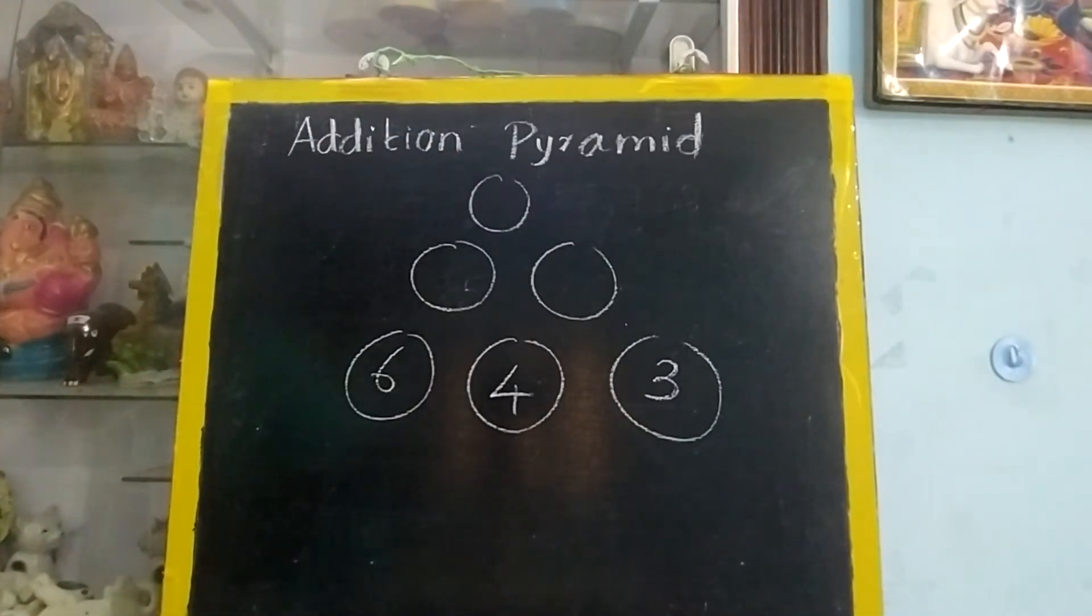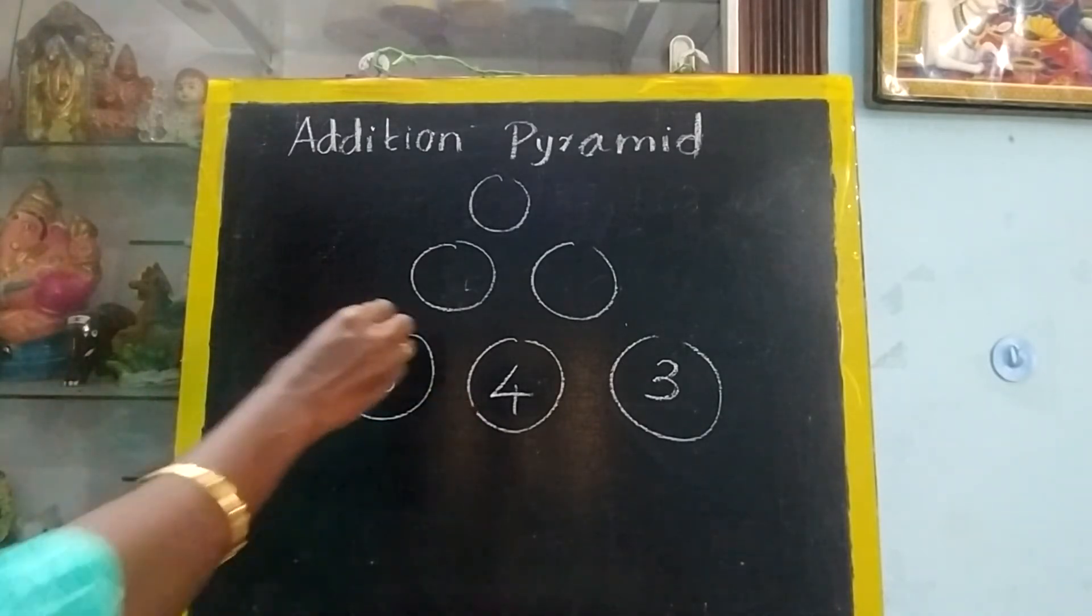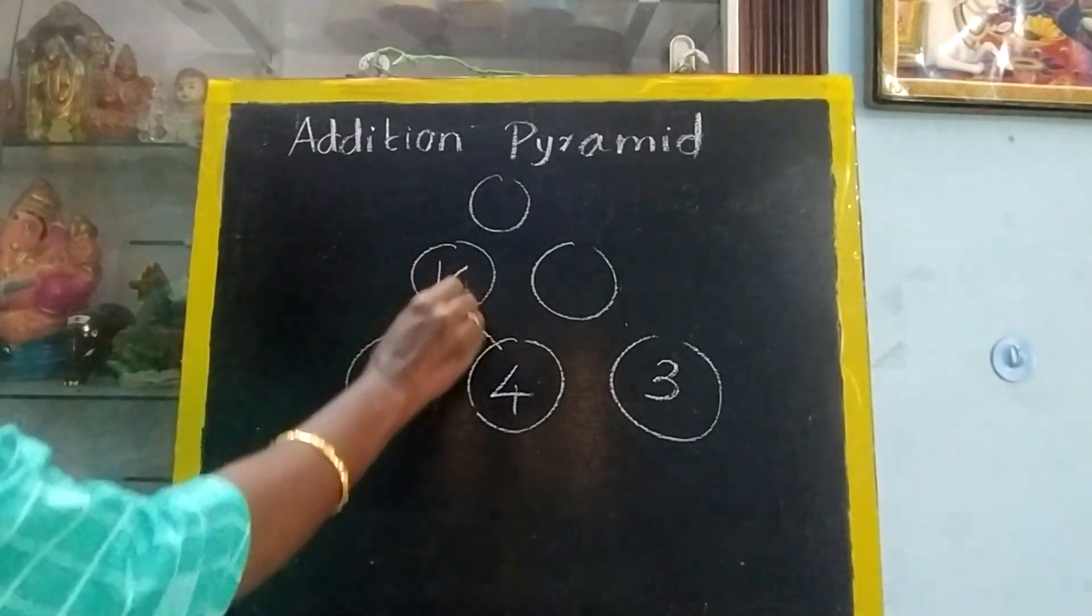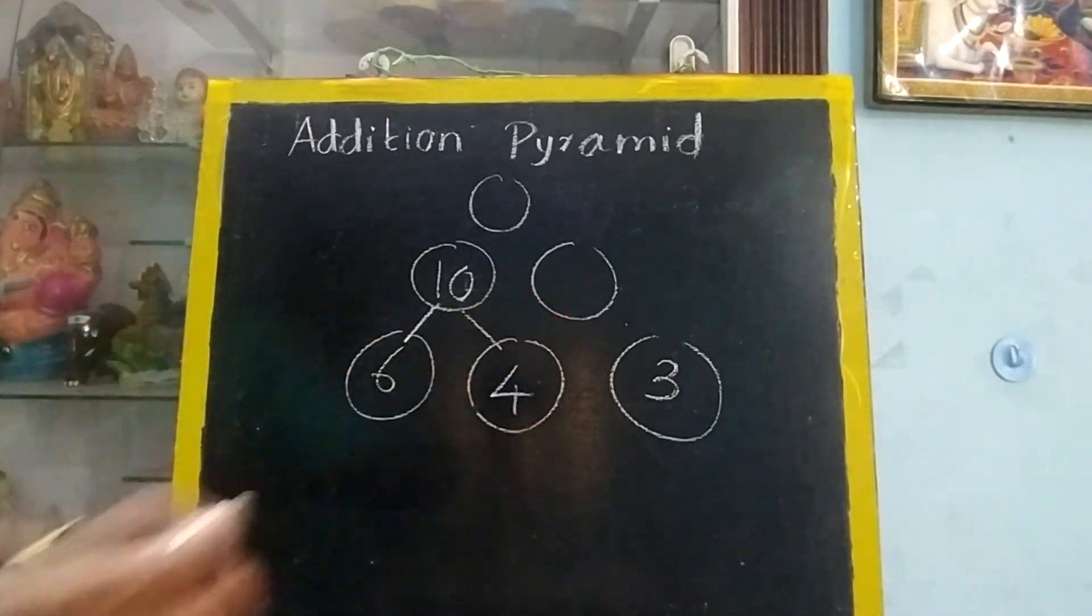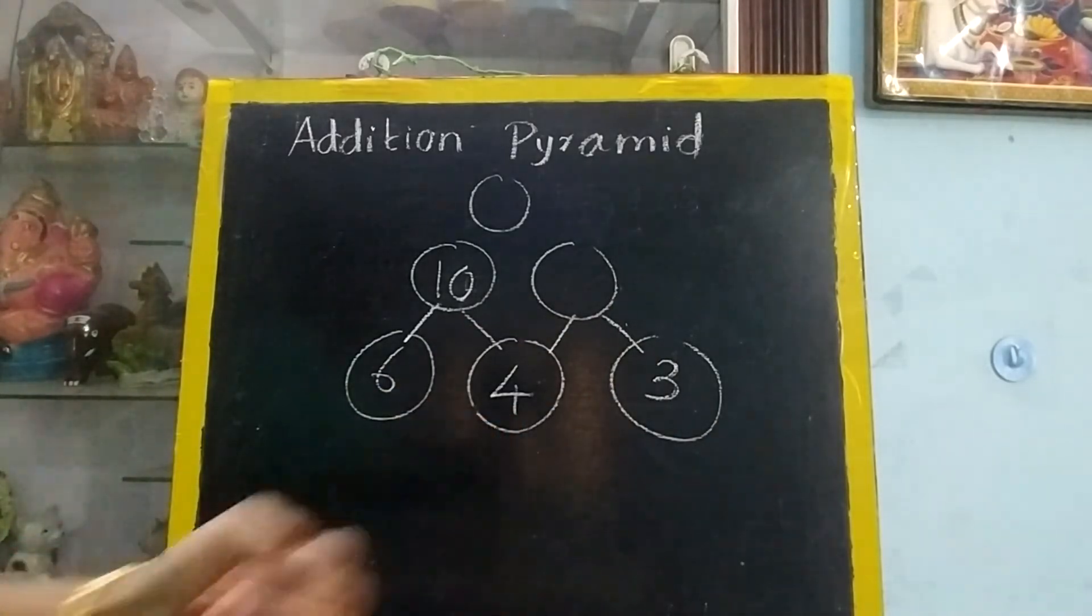One more example. So base numbers are given. Which two you will add? 6 and 4. If you add, the sum will come here. 6 plus 4 is 10. Now, for this circle add 4 and 3. 4 plus 3: 5, 6, 7.